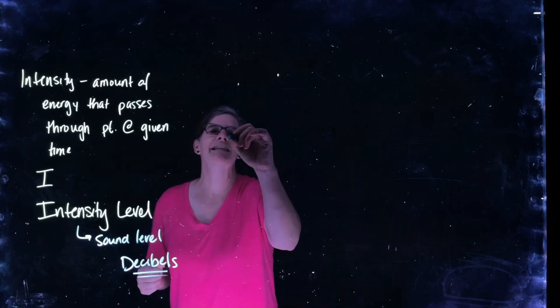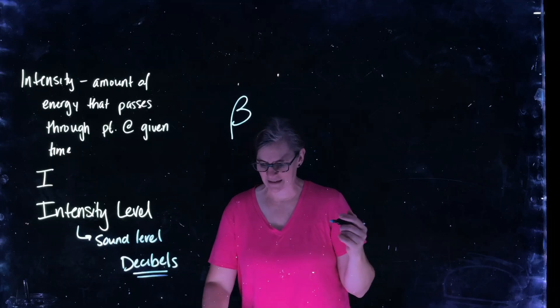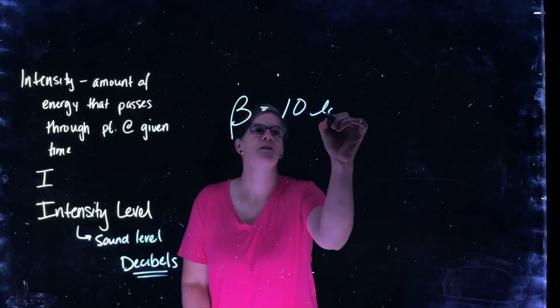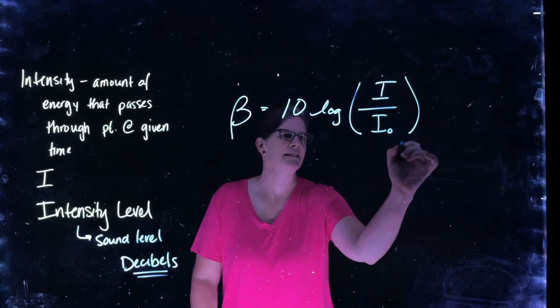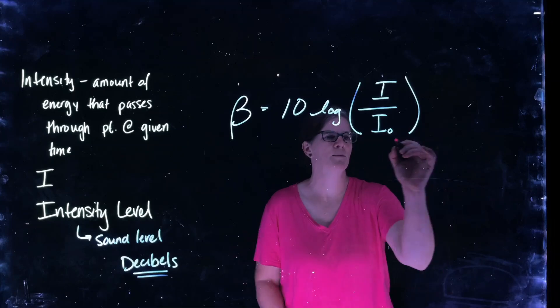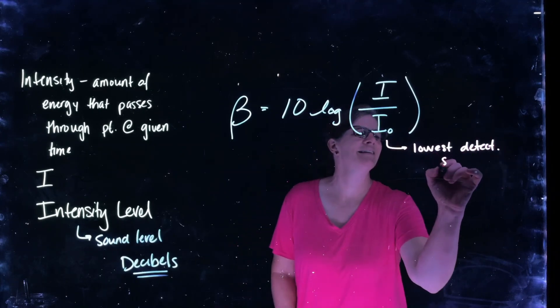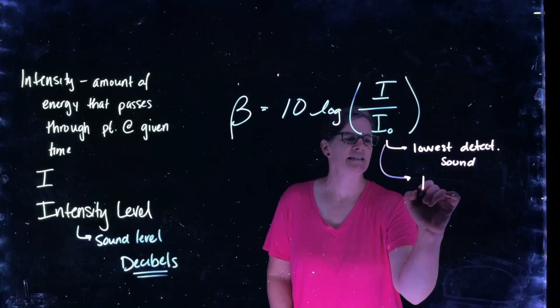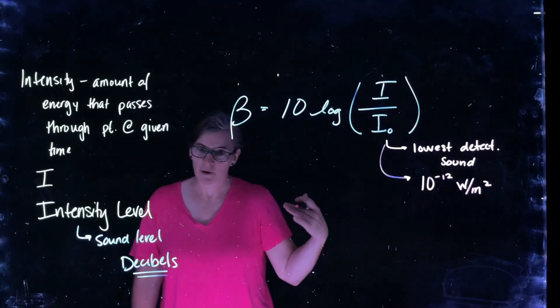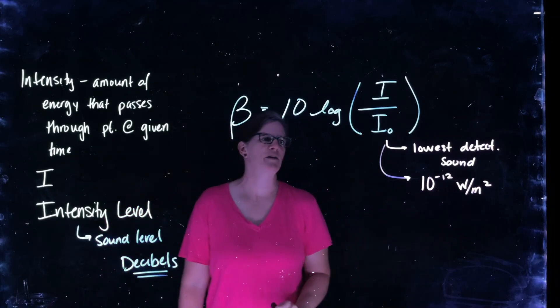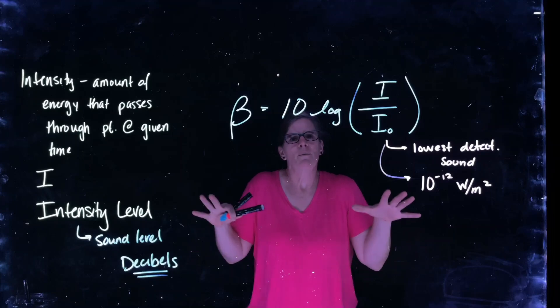So our intensity level, not intensity, our intensity level, we use beta as our variable for intensity level, is equal to 10 times the log of the true intensity of the sound relative to intensity not, where intensity not is our lowest detectable sound, physiologically, but it has a value. It's a constant and it's 10 to the minus 12 watts per meter squared. Remember, power is in watts, power per area, intensity, power per area, watts per meter squared. So I not is a constant value and what we're doing is we're saying how much above that base value am I?